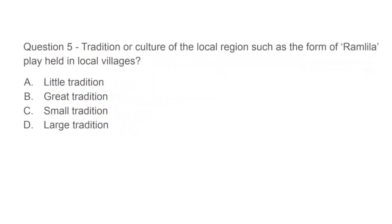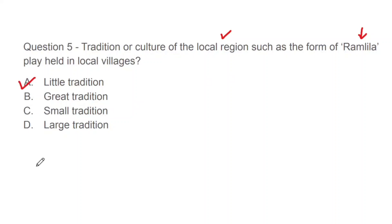Question 5: Traditions and culture of local regions, such as the form of Ramlila play held in local villages — in sociology, what concept do these fall under? Options: little tradition, great tradition, small tradition, or large tradition. The correct answer is A, that is little tradition.